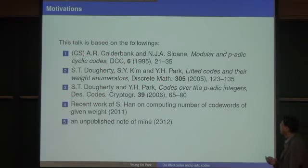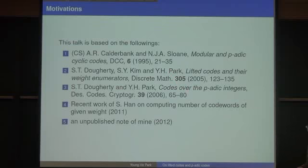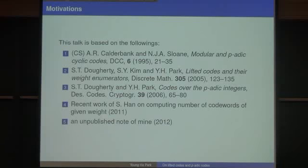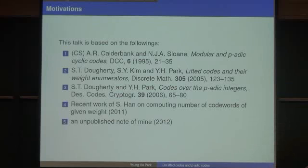In this paper, we computed weight enumerators of the lifted code of a binary code of length 24, but the calculation was not complete. Then it was maybe 2010 or so, I talked about it to Song Yoo Han and asked him to complete the calculation. He came up with a very good algorithm to compute weight enumerators for a given weight, so that was complete in some sense, but there was also my motivation to look at more of the codes.